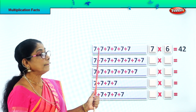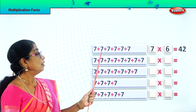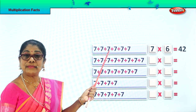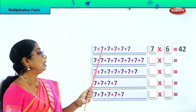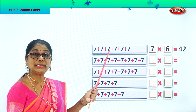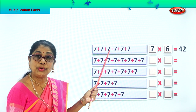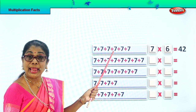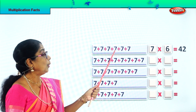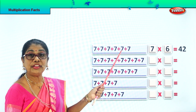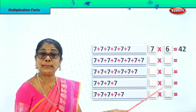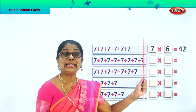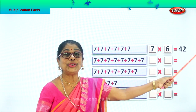7 sevens are? 7 plus 7 is 14. 14 plus 7 is 21. 21 plus 7 is 28. 28 plus 7 is 35. 35 plus 7 is — so what is 7 sixes are? 7 sixes are 42.